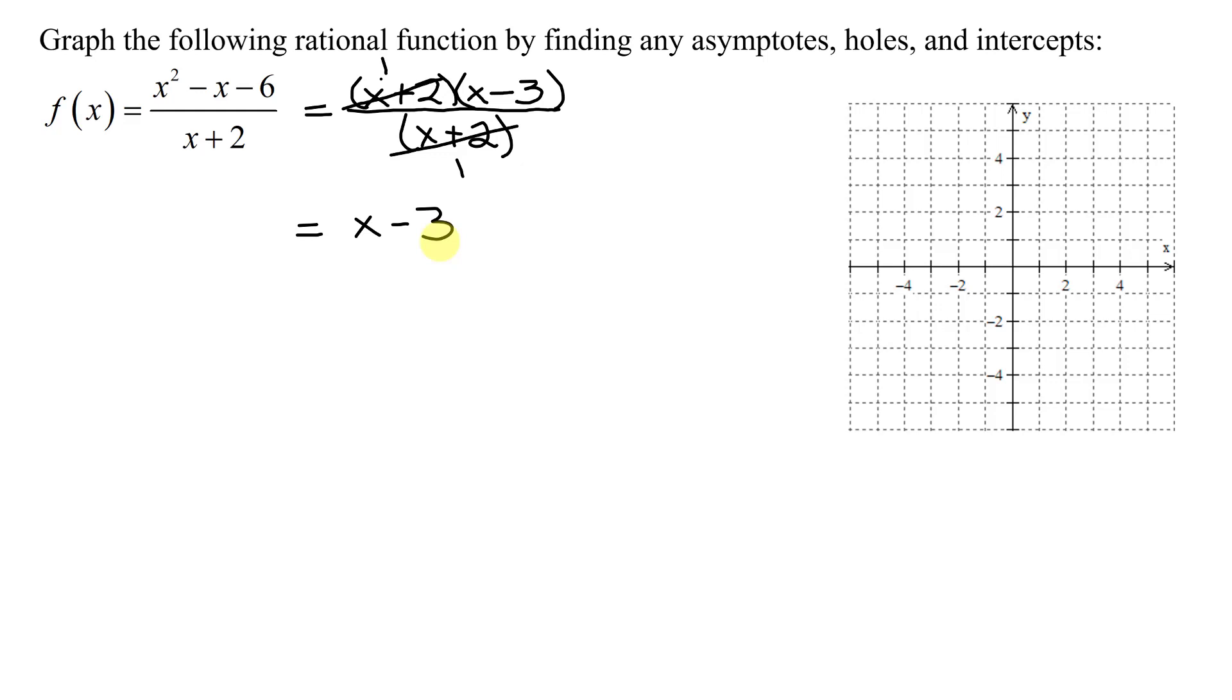Now be careful, this function and this function are not totally equal. They agree at every point except the hole, caused by reducing out this common factor. And where does the hole occur? Well, the hole occurs at the 0 of this common factor.